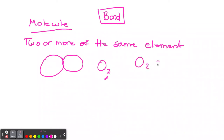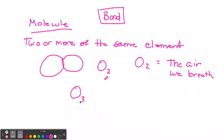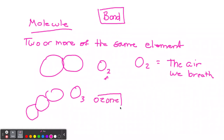O2, by the way, is the air we breathe. And then there's O3, for example - that would be three oxygen elements together. O3 is ozone, which makes up the ozone layer that protects us from ultraviolet rays. So that's what a molecule is. Very simple.